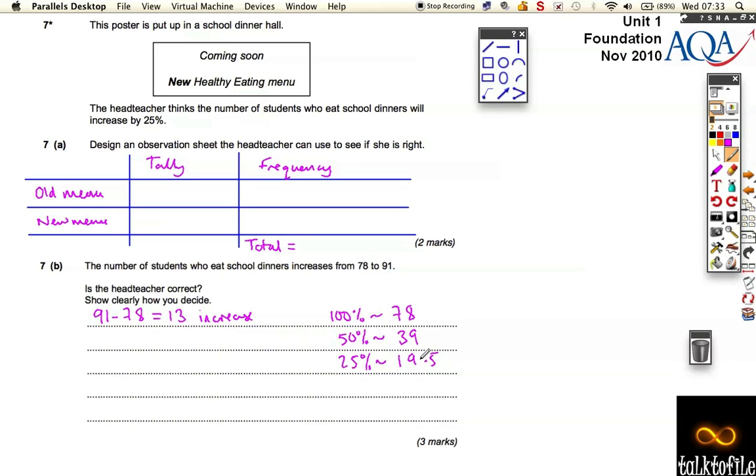So actually it should have increased by 19 or 20 if it had gone up 25%. So you just need to write that then. So she is wrong as the increase was only 13 and needed to be 19.5 to go up by 25%.